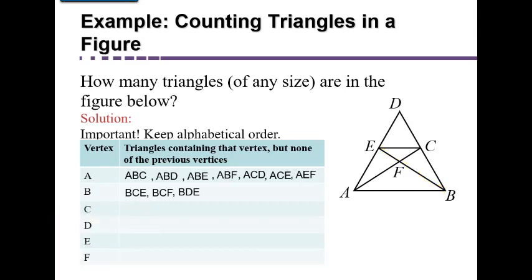Moving to the C's, starting with C, D: C, D, E is a triangle, so we list it. C, D, F is not a triangle because D and F are not connected. Done with the C, Ds. For C, Es: C, E, F is the only possibility and it is a triangle, so we list it. Then for the D's, D, E, F is the only possibility, but that's not a triangle, so we're done.